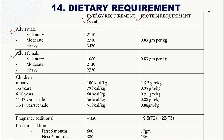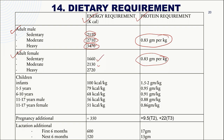For adult males: sedentary activity requires 2,110 kcal; moderate activity requires 2,710 kcal; heavy activity requires 3,470 kcal. Protein requirement is 0.83 g/kg body weight, same for females. For adult females: sedentary activity requires 1,660 kcal; moderate activity requires 2,130 kcal; heavy activity requires 2,720 kcal.